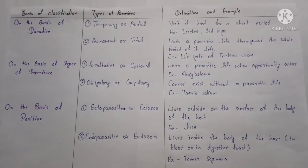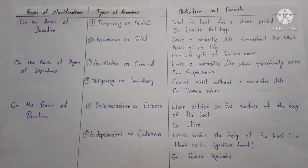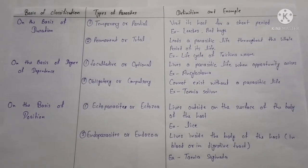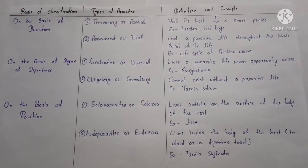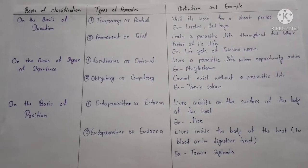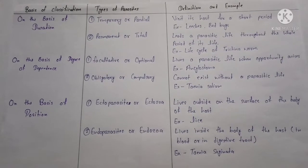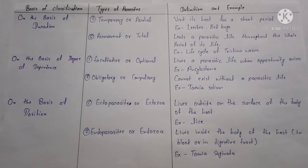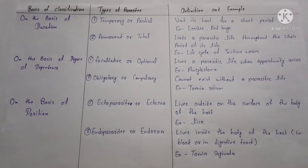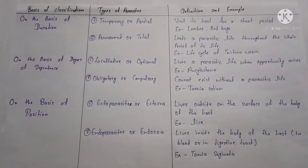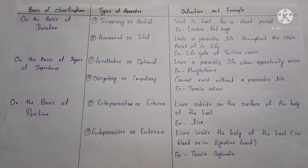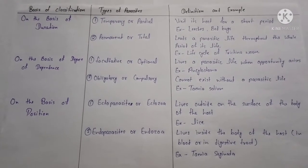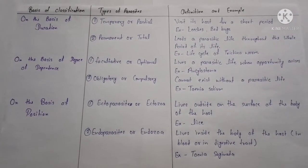Now we will see classification of parasites on different bases. First, on the basis of duration, there are two types: temporary parasite and permanent parasite. A temporary parasite visits its host for a short period. Example: leeches or bed bugs. A permanent parasite leads a parasitic life throughout the whole period of its life.